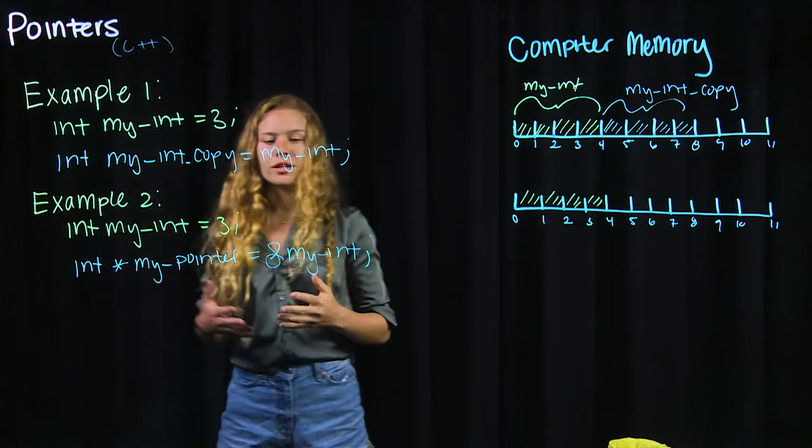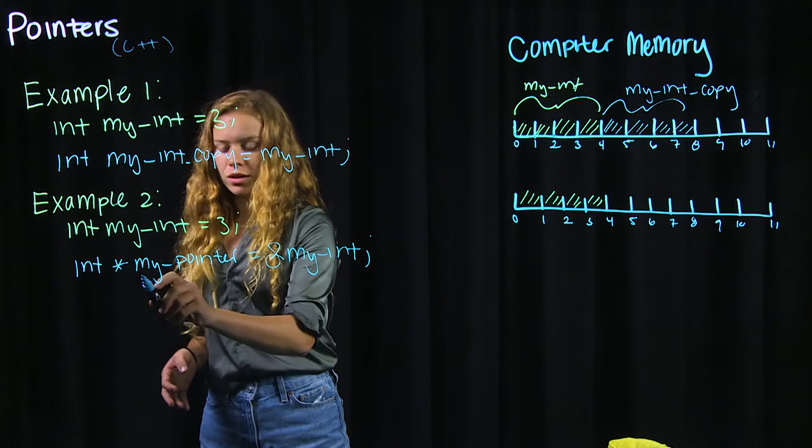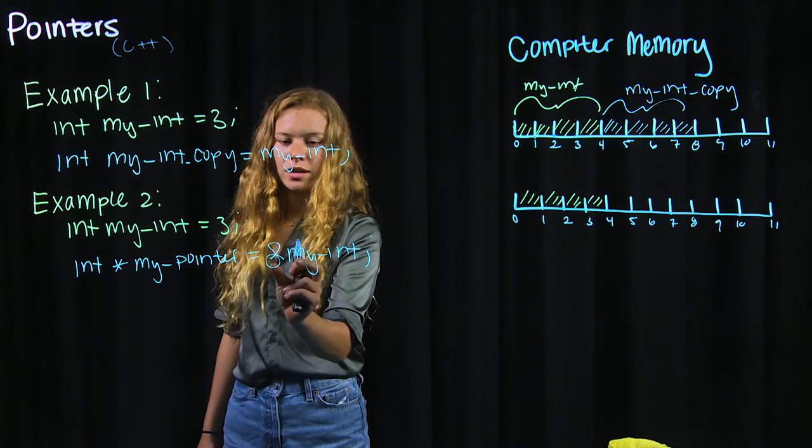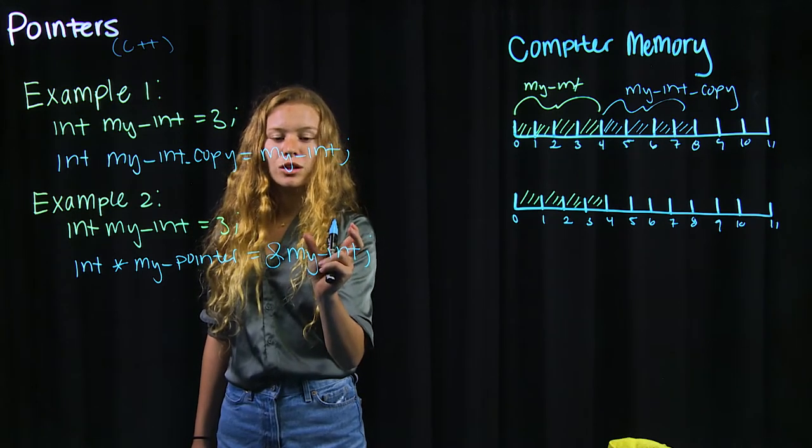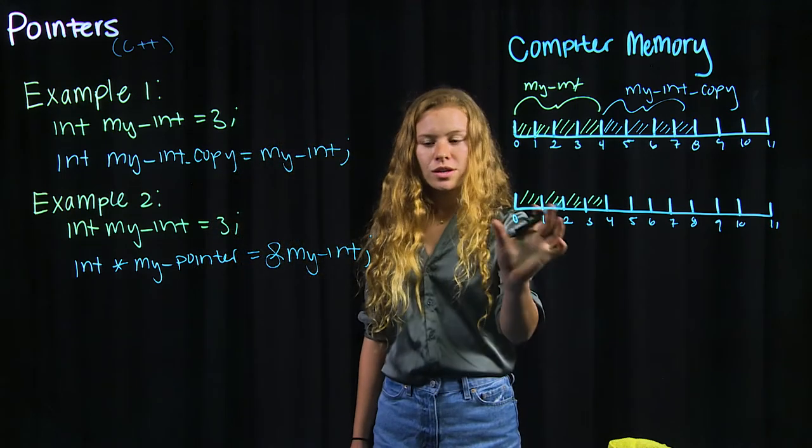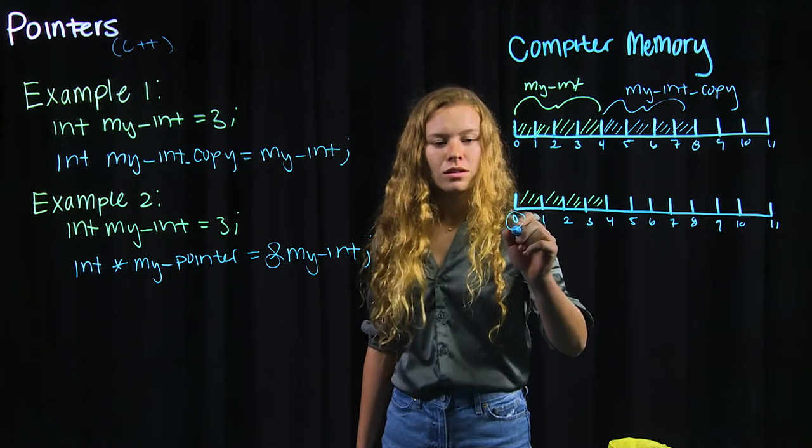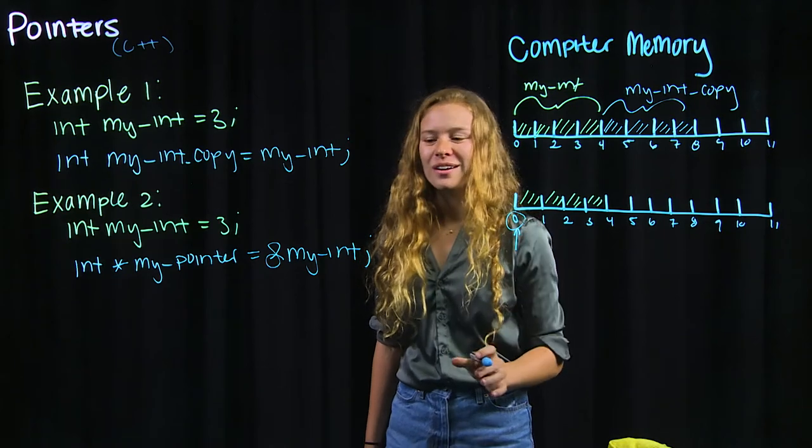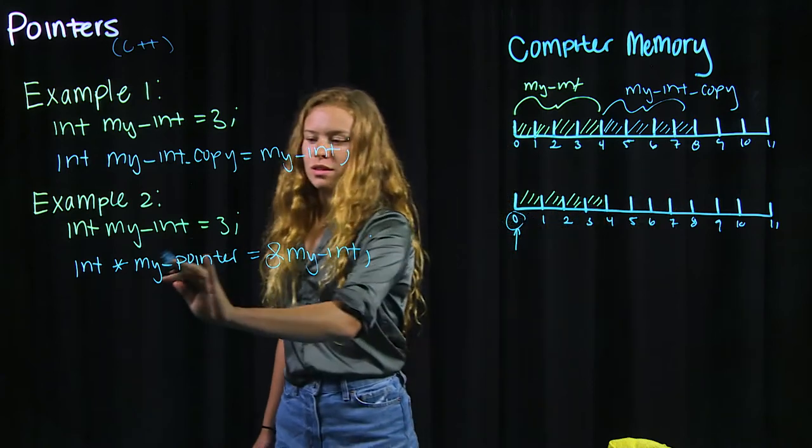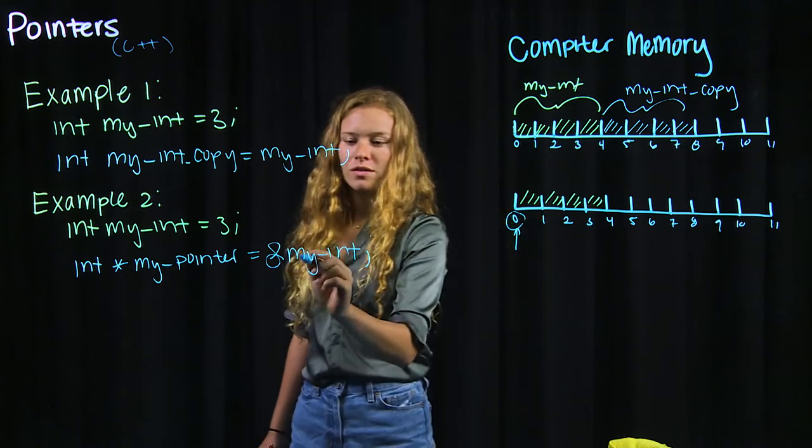But to make a copy of it we're going to say int star my_pointer = ampersand my_int. So there might be a lot going on here but let's break it down first. So my_pointer is equal to ampersand my_int. The ampersand here functions to give us the location in memory that my_int is stored at. So the location in memory that my_int is stored at is at 0. So let's put a pointer, a little arrow there to represent my_int.